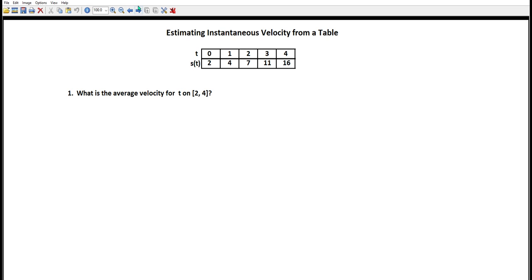Between t equals 2 and t equals 4, our particle moves from 7 to 16. So delta s is 16 minus 7. Delta t is 4 minus 2. So we get 9/2, and that's meters per second.